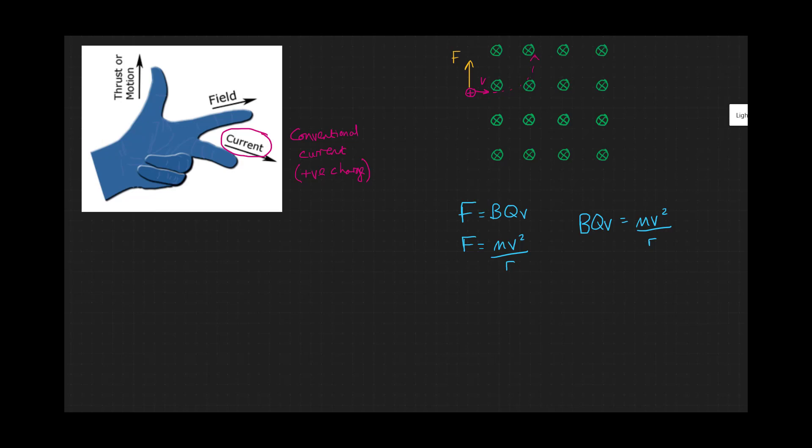Cancelling V and rearranging for R, this gives us R is equal to MV over BQ. This tells us that the radius of the circular path that these charges will take is proportional to their mass and to their velocity and inversely proportional to the strength of the magnetic field, the magnetic flux density, and their charge.